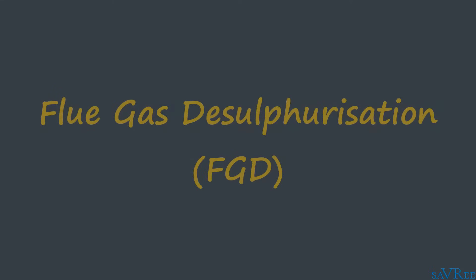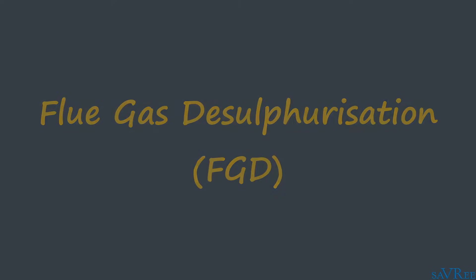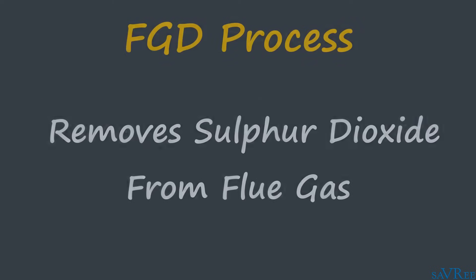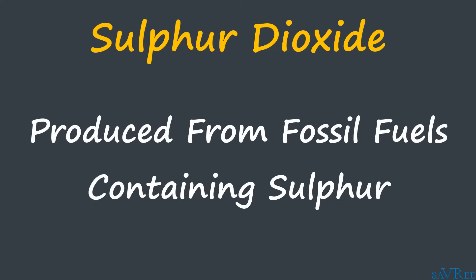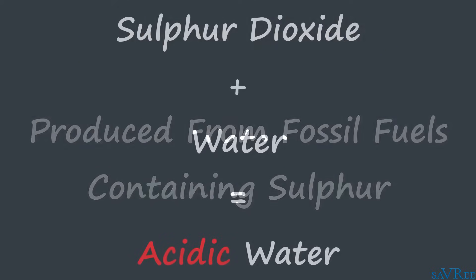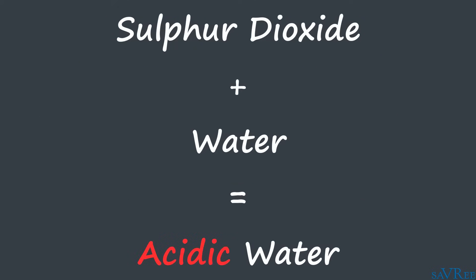Flue gas desulphurization, or FGD, is a process used to remove sulfur dioxide from a flue gas stream. If we're burning fossil fuels that contain some sulfur, then we're going to produce sulfur dioxide. Unfortunately, sulfur dioxide, when it mixes with water, makes the water quite acidic.